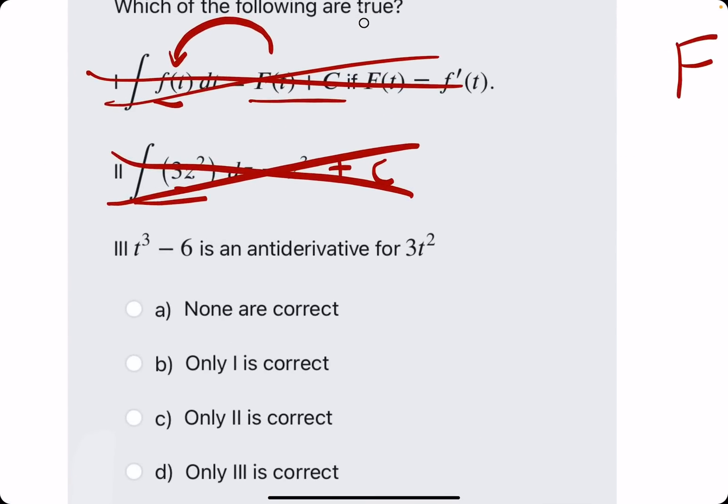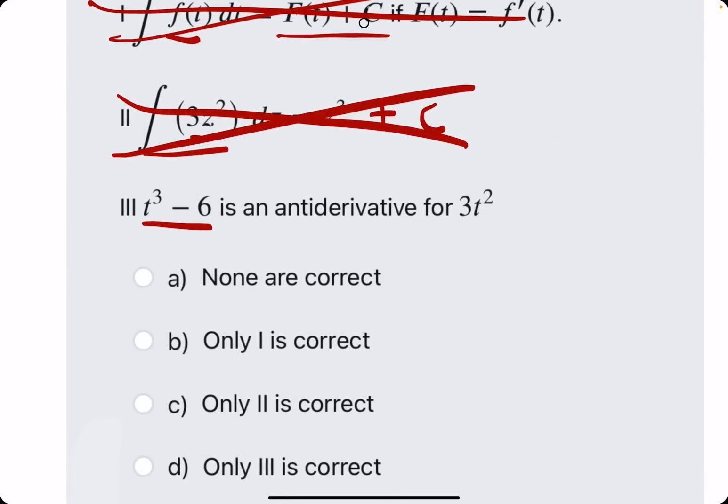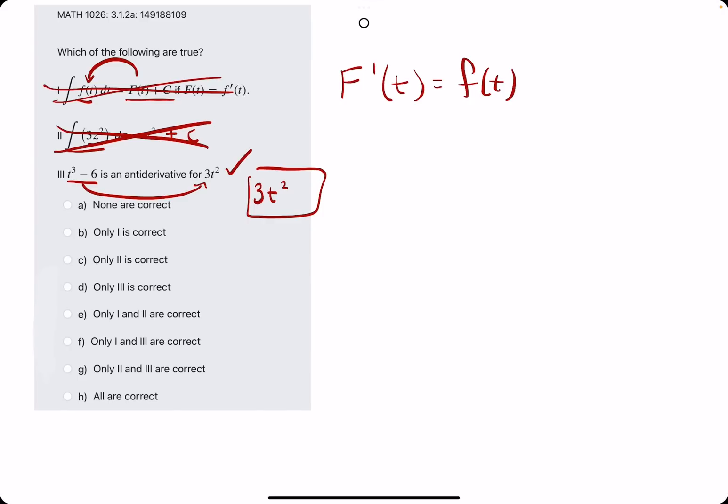All right, let's... Number three. t³ - 6 is an antiderivative for 3t². So, kind of a similar problem. The question is, if we took the derivative of t³ - 6, would we get 3t²? And that's exactly right, because we'd bring the 3 out, leave the t, subtract 1 to get 3t², and then the minus 6 would go to plus 0. You know, it would go to 0, so we would just be left with this. And so, t³ - 6 is an antiderivative for 3t². Break out the eraser to see that only 3 is correct.